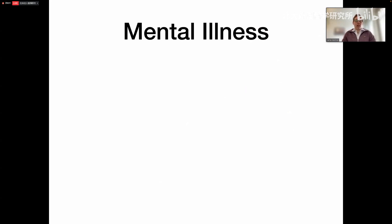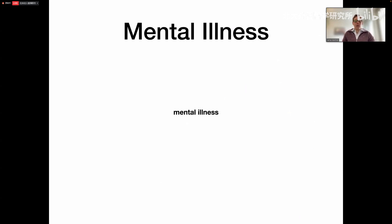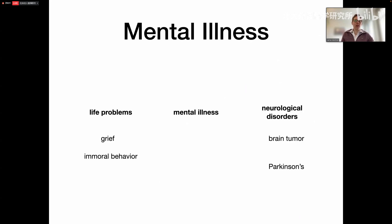When we want to model mental illnesses, the question we must first answer is: what are mental illnesses to begin with? If we want to investigate mental illnesses, we need to scientifically investigate abnormal mental states. In order to research what exactly these are, we need to delineate them, on the one hand, from life problems such as grief or immoral behavior, and on the other, from neurological disorders such as brain tumors or Parkinson's.